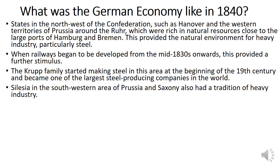Also for Prussia, in the southwest there was Silesia, another area rich in natural resources. Saxony, the state just below Prussia, also had a tradition of heavy industry. So we have countries like Saxony and Hanover with strong industrial areas, and Prussia benefiting from two key industrial zones: the Ruhr on the west side and Silesia on the eastern side.